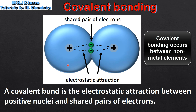In this diagram we have two atoms of hydrogen. Each hydrogen atom has one valence electron. By sharing these electrons, each atom can achieve the electron configuration of a noble gas. The covalent bond is the electrostatic attraction between the positive nuclei of the hydrogen atoms and the shared pair of electrons.